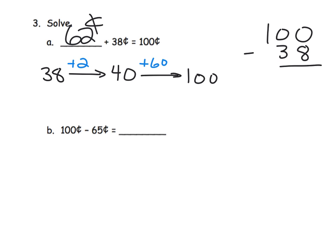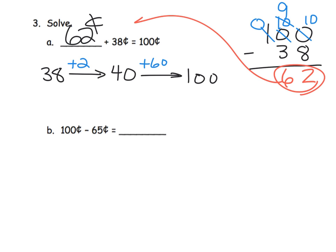We could always use the standard algorithm as well because we learned that in module 5. We have no ones, no tens, so we're going to take one of this 100 and regroup it. That's going to give us 10 tens, then I'm going to take one of those tens and that gives us 10 ones. So now we have 10 ones, 9 tens, and no hundreds.